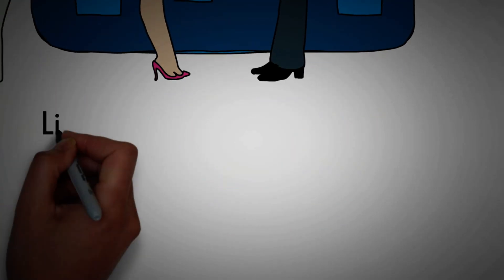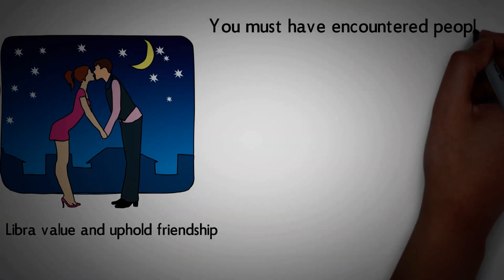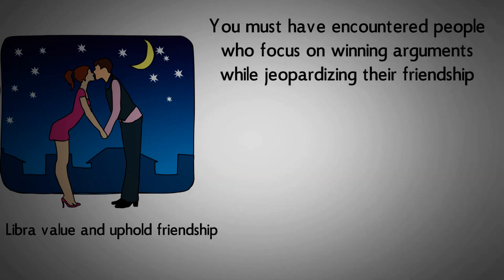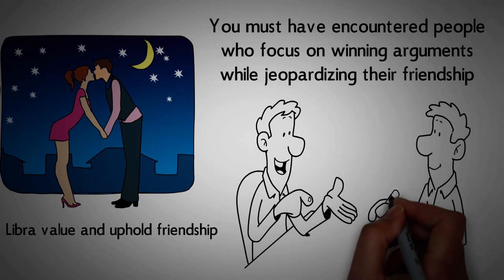Number 15. Libra value and uphold friendship. You must have encountered people who focus on winning arguments while jeopardizing their friendship. Libra is not one of them. They prefer to lose an argument rather than lose a friend.